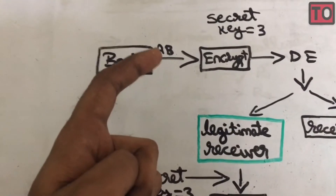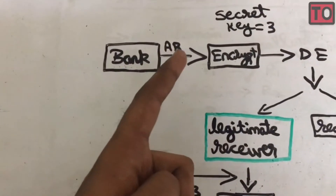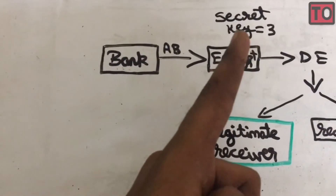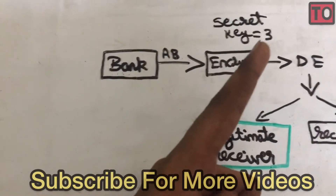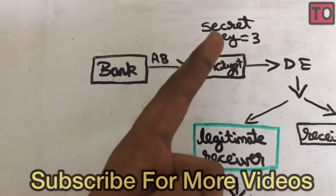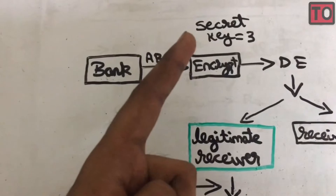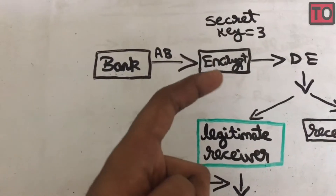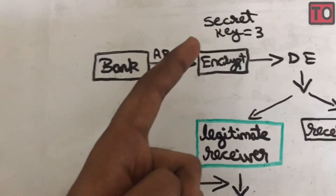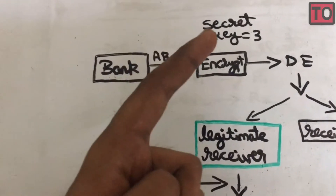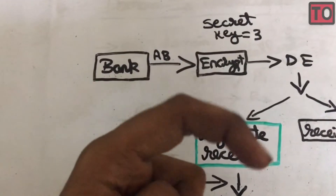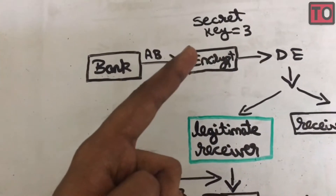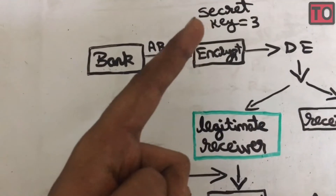That message is how you will get the payment. The bank will encrypt the message using a secret key. You can generate a secret key at the bank and use it to encrypt your data.